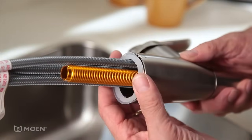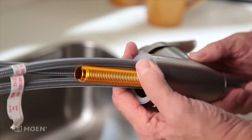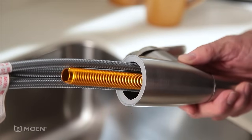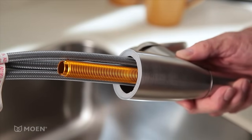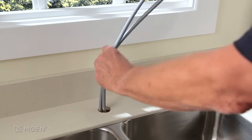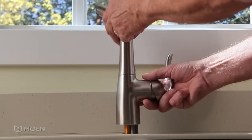If there is one hole in your countertop or sink, feed the hoses and faucet shank through the spout base gasket and align it to the base of the faucet. Then insert the entire assembly into the mounting hole.